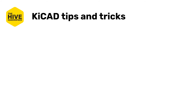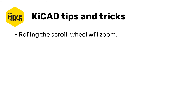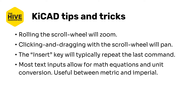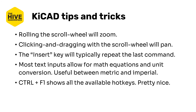KiCAD has a few program-wide shortcuts that are good to know about. Like most CAD software, a three-button mouse is highly advantageous, with the scroll wheel being used for both zooming and panning. The Insert key will typically repeat the last command, which is useful for placing or setting values for multiple parts. Most text inputs will handle mathematical expressions and unit conversions, which is very useful because metric and imperial units are rampant in PCB design. Most if not all shortcuts are customizable, and if you hit Ctrl+F1 you will see all available hotkeys.